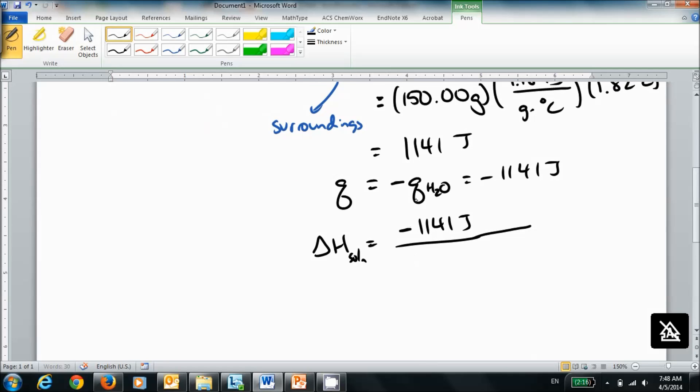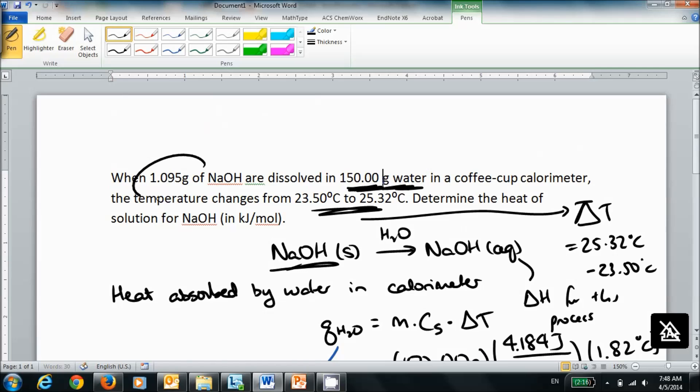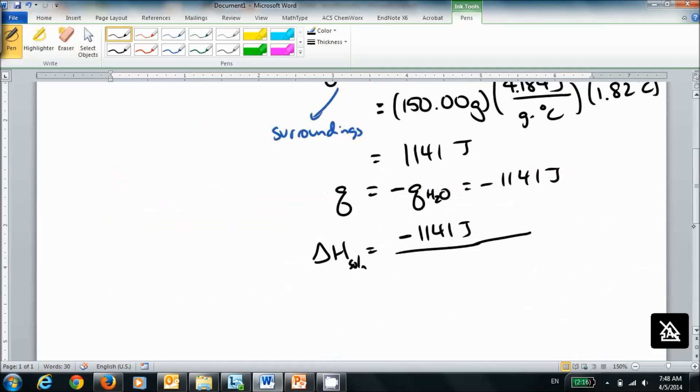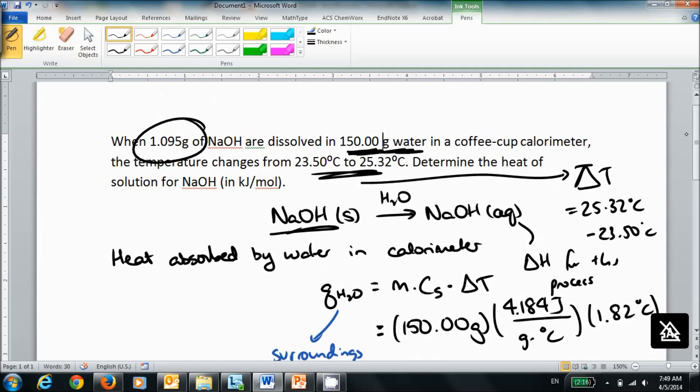We're trying to figure out the number of moles. And this time, because we are looking at moles of sodium hydroxide, we use this mass, 1.095 grams, because that's the mass of sodium hydroxide we have. I convert that to moles using 39.998 grams per mole.